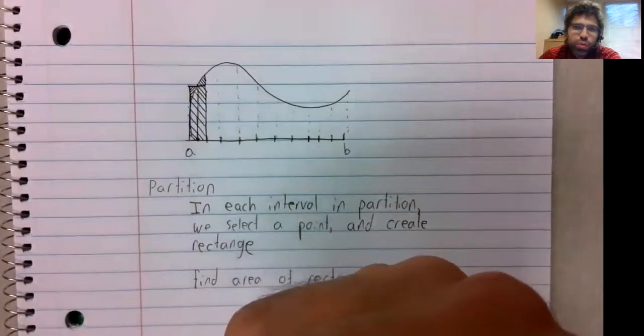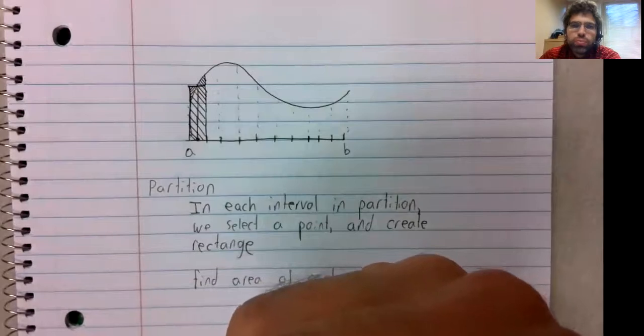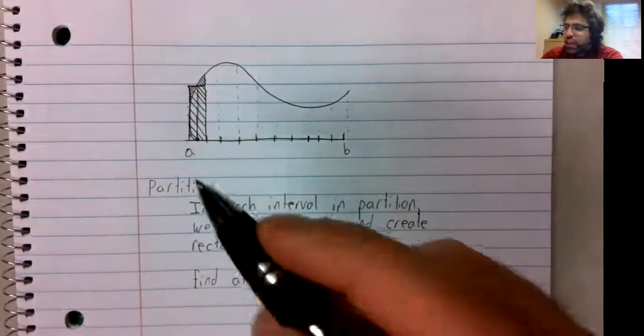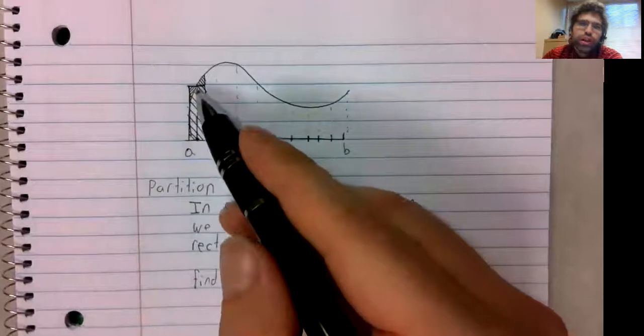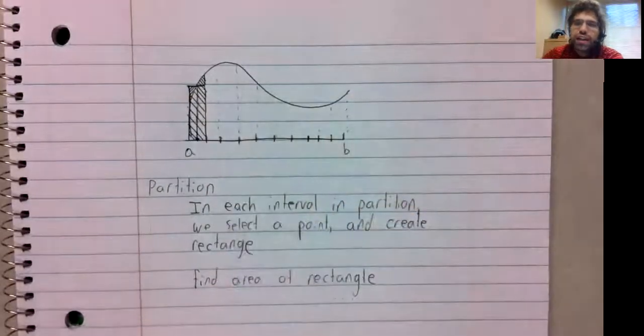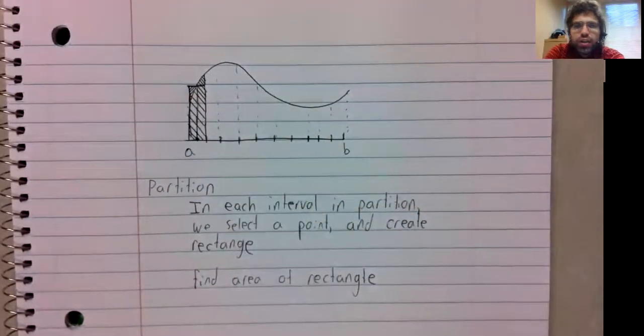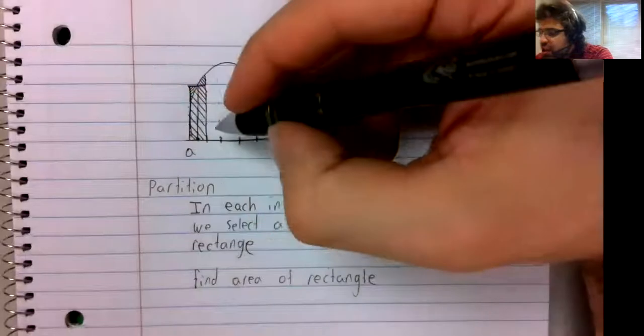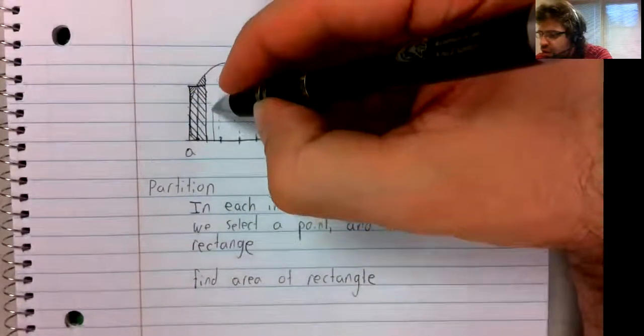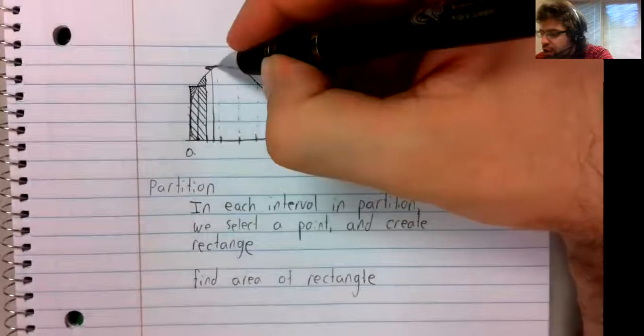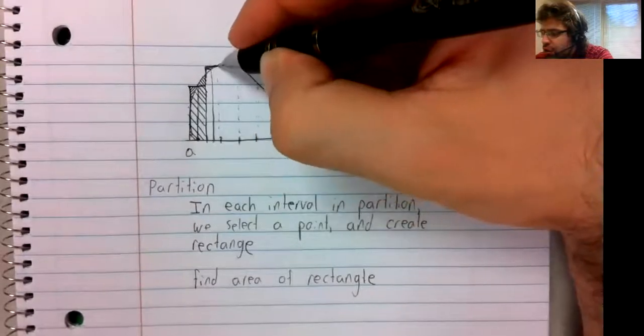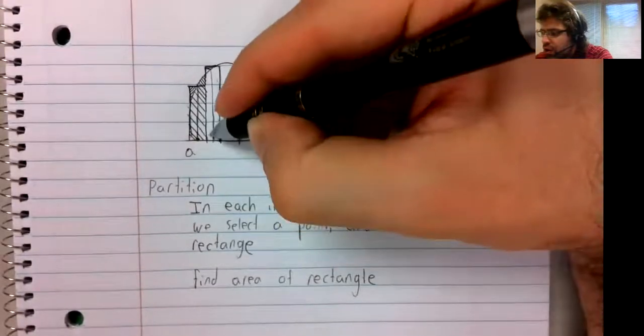So the hope is that those things are going to kind of cancel out, and the area of this rectangle should be a pretty good approximation of the area under the curve.